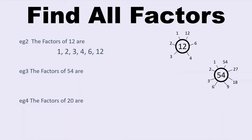The only numbers I have left to try are 7 and 8. Can I divide by 7? No, the closest multiple of 7 I can think of is 56, which is 7 times 8. And I can't divide by 8 either. So that's it. My factors of 54 are 1, 2, 3, 6, 9, 18, 27, and 54.